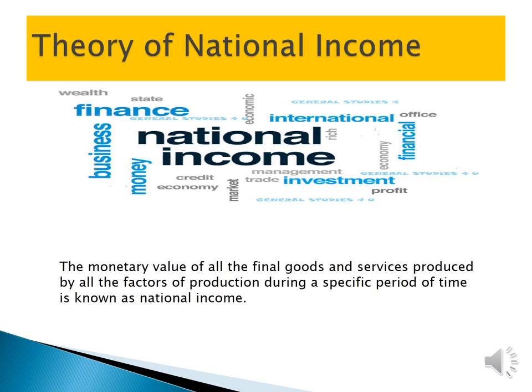Let's start with the first theory — the theory of national income — which we are going to study under the subject matter of macroeconomics. The monetary value of all final goods and services produced by all factors of production — land, labour, capital, and entrepreneur — during a specific period of time is known as national income. It is also included under the subject matter of macroeconomics.